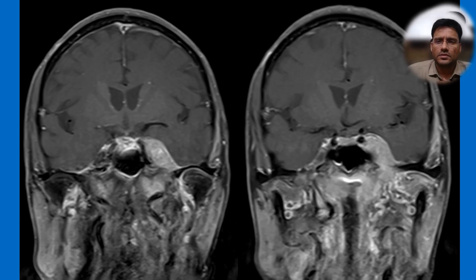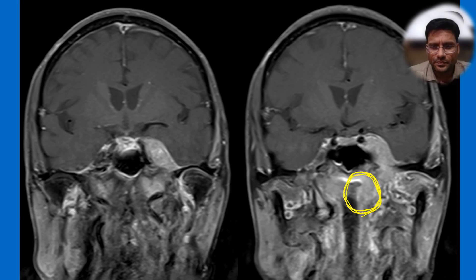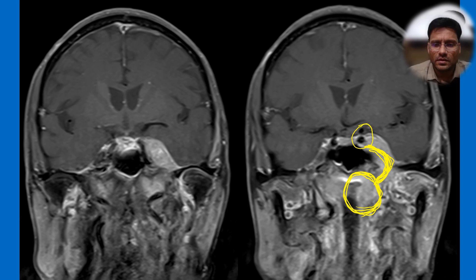The game-changing sequence was the coronal post-contrast images, where you can see the mass at the fossa of Rosenmüller which is contiguous with the mass in the cavernous sinus. When you see such contiguous involvement, the first thing to think in an elderly male is nasopharyngeal carcinoma spreading through perineural spread via foramina into the cavernous sinus. There is no obvious narrowing of the carotids, making this a clear-cut case of nasopharyngeal carcinoma spread into the cavernous sinus through perineural spread.